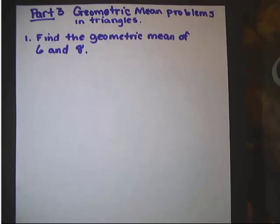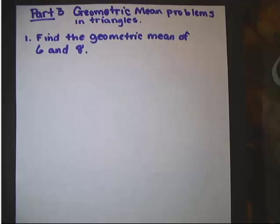We're going to start by reviewing what exactly is a geometric mean. We talked about how an arithmetic mean of two numbers — for instance 6 and 8 — is always the average: add them together and divide by 2. So the average of 6 and 8 would be 7.